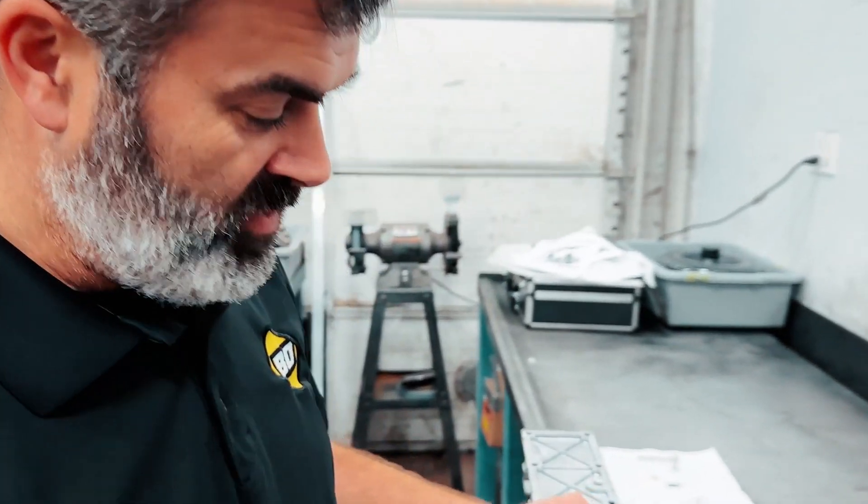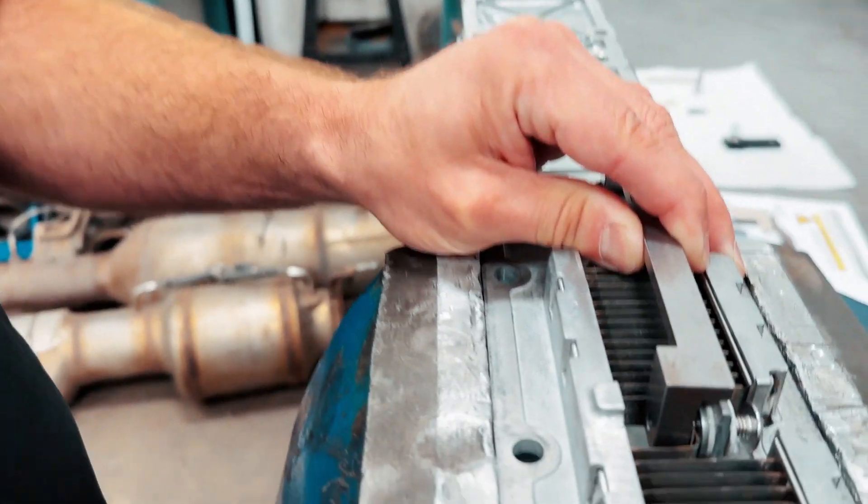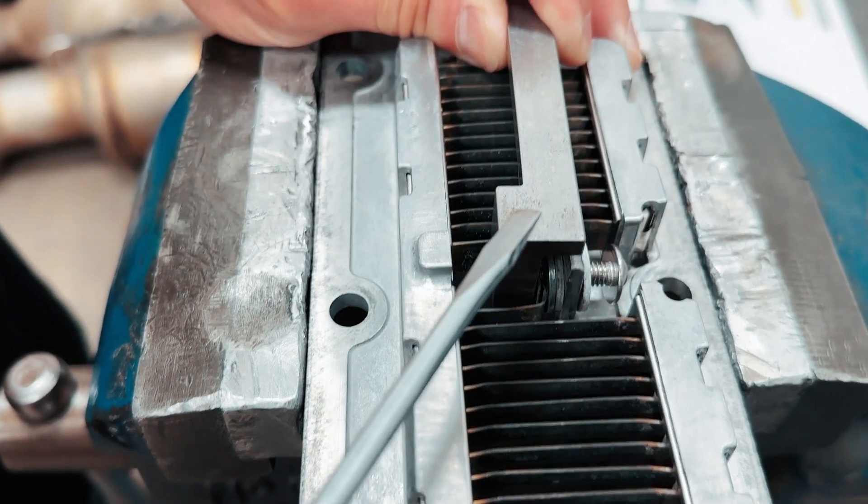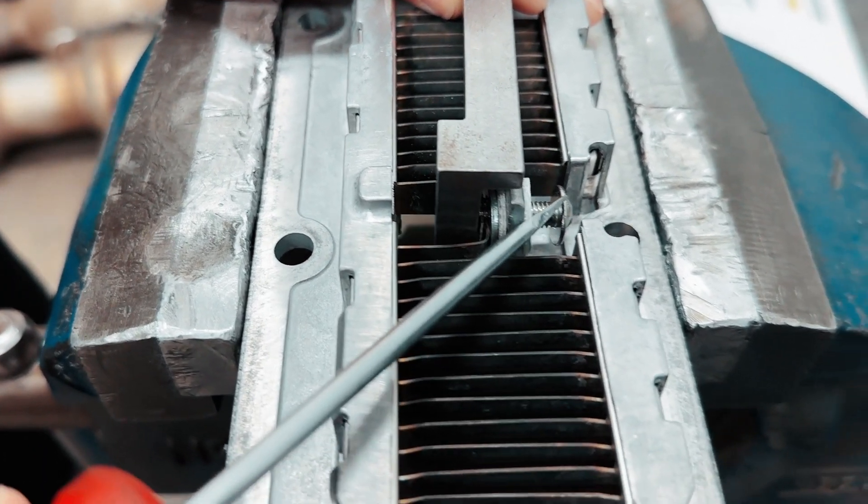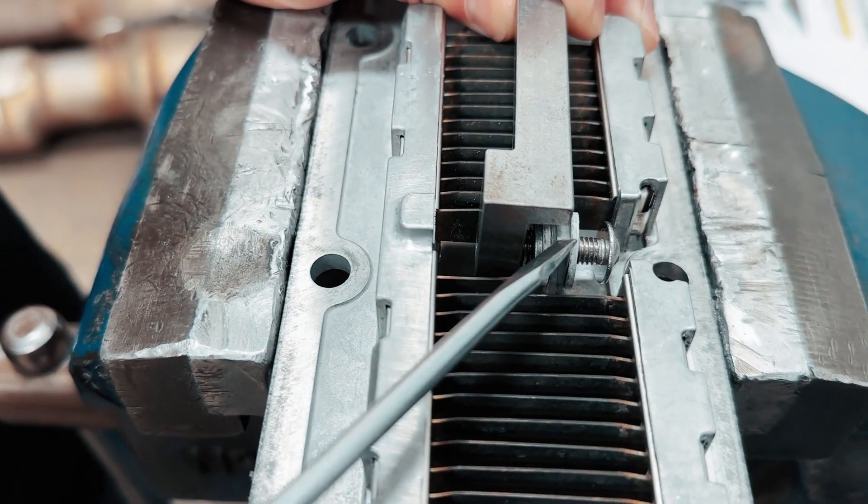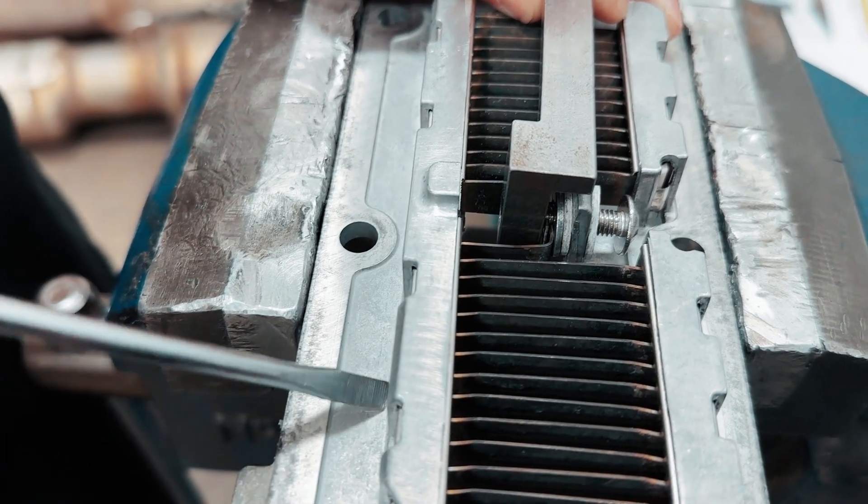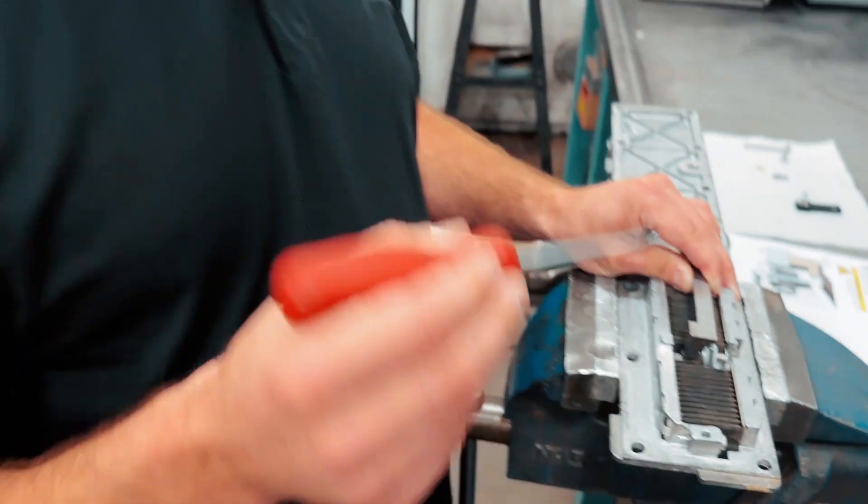So again, just being a little bit more diligent here. If this bus bar or this bolt contacts any part of this aluminum intake when it's powered up, that will cause a short, that will melt things. That's why we're being extra careful here.